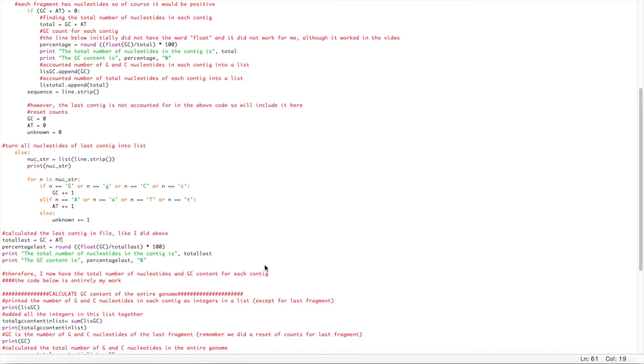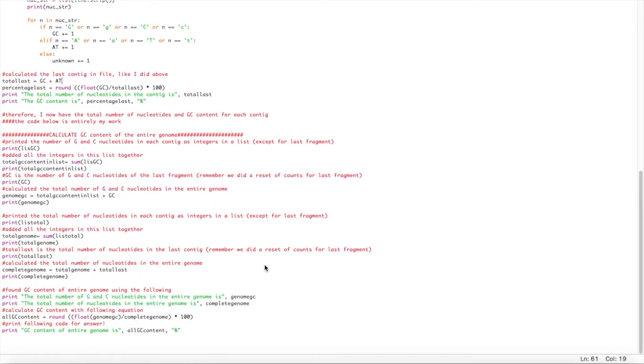So how did I calculate the overall GC content? I added the integers in the list to the respective values from the last contig to find the total number of guanine and cytosine in the entire genome, as well as the total number of nucleotides in the entire genome. And then using the equation, I managed to find the overall GC content.